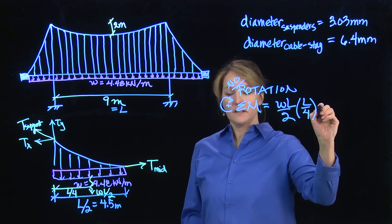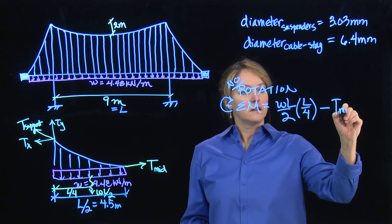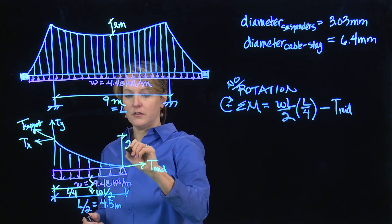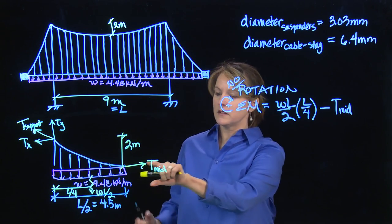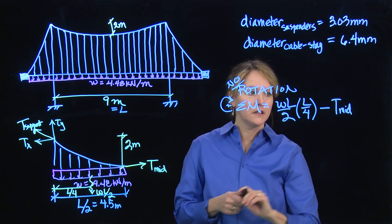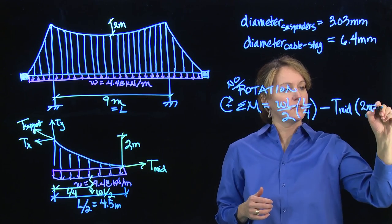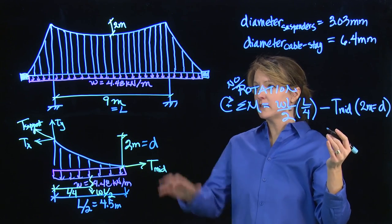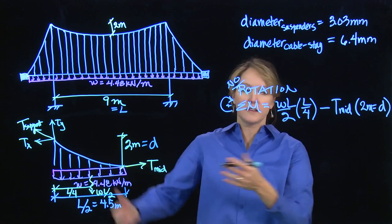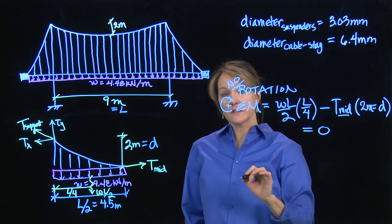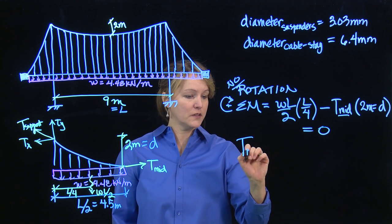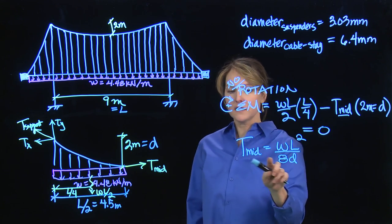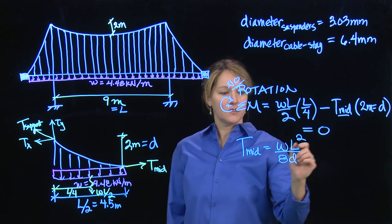And that's balanced out by this T_mid, which is the tension force at the middle. And I left off the distance, but that distance is the sag and is 2 meters. And that's important because that's the distance that this force, this tension force, is acting from my support. So that will be 2 meters, which I often refer to as D, which is the sag in my suspension bridge. And that's something we would play with as a designer, how far should the span be and how much sag should we use. Setting that equal to 0, I can solve for this tension force. So this tension force is going to end up being W L squared over 8 D. And that's going to allow me to solve for this tension force at the mid.